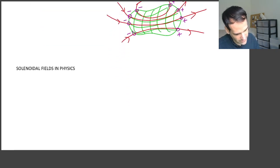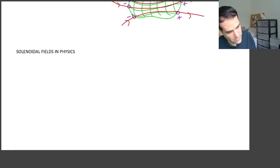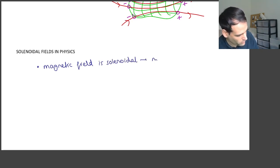So here, when I say solenoidal fields in physics, I'm going to repeat that the magnetic field is solenoidal. No magnetic monopoles.